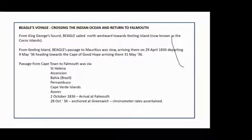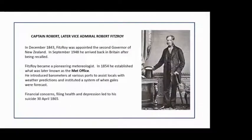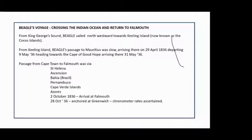On the 2nd October 1836, Beagle arrived in Falmouth, nearly five years after departure. On the 28th of October, she anchored at Greenwich, the chronometer readings were ascertained, and thereafter Beagle was paid off and prepared for a third voyage. On the third voyage, Beagle returned to Australia to survey the Australian coasts under a different captain — this is not covered by Captain Fitzroy's narrative.